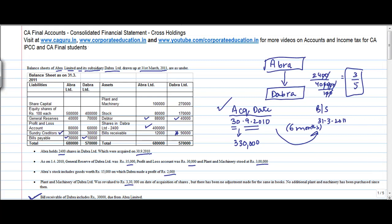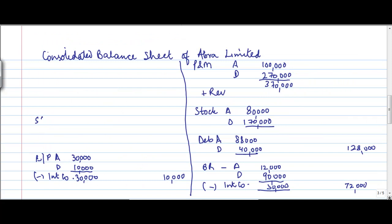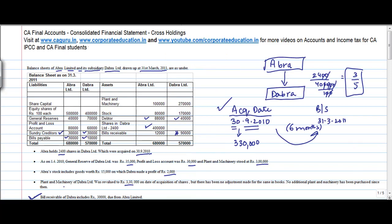Sundry creditors. 30,000, 30,000. No adjustments. Simple. Sundry creditors. A. 30,000. D. 30,000. 60,000. Right? Well, is there anything? Profit and loss, general reserve, equity, share capital.